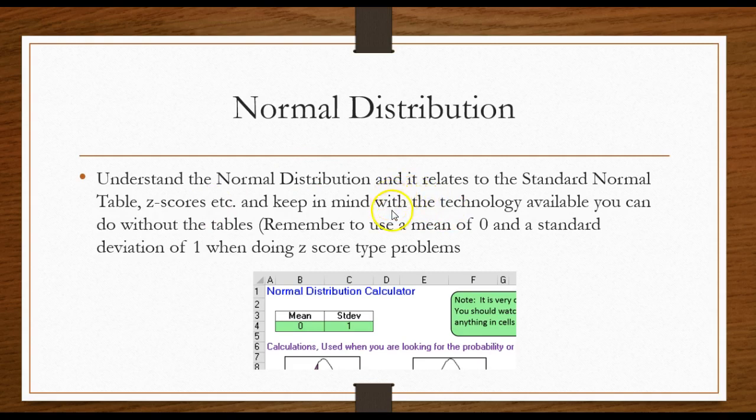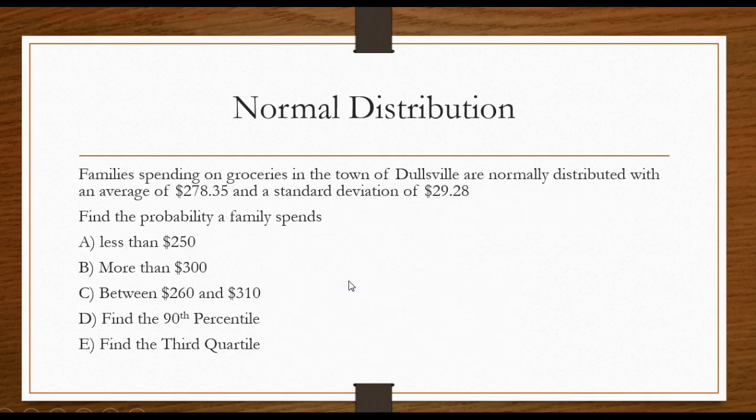That works these problems very well. Like if I'm doing a z-score type problem, remember that it is the standard normal, so for one of those I would put in a mean of zero, standard deviation of one.